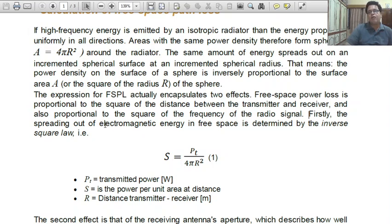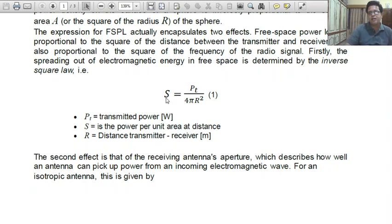Firstly, the spreading out, that means how it propagates after emission. Energy propagates. Spreading out of electromagnetic energy in free space is determined by the inverse square law. What is S? S is the power per unit area at a distance.